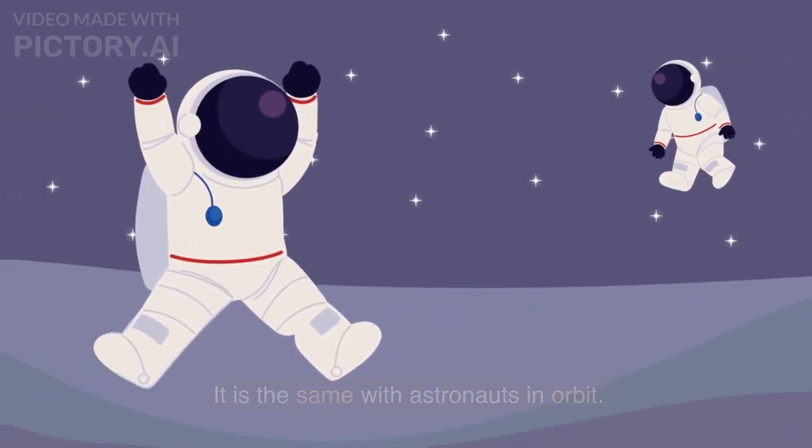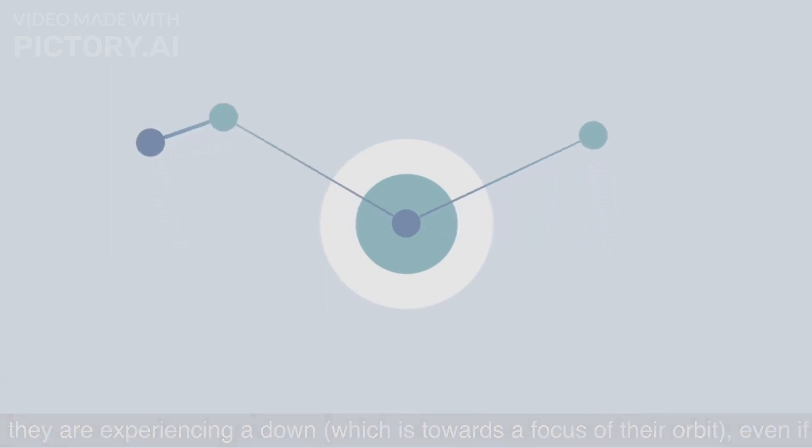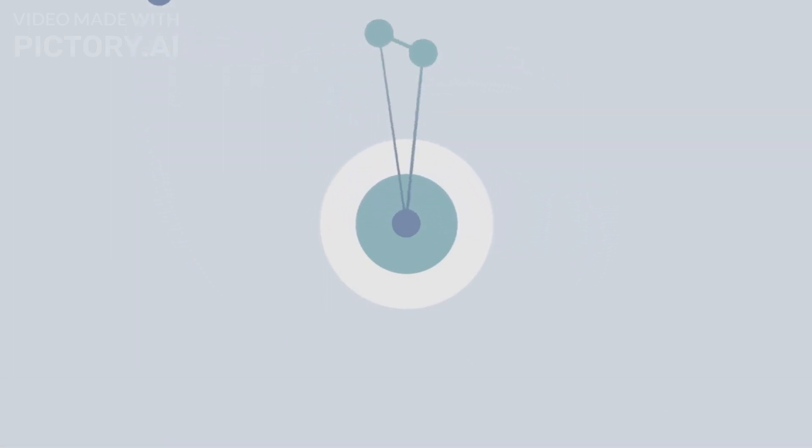It is the same with astronauts in orbit. The round path of their orbit is a direct indication that they are falling and that they are experiencing a down, which is towards a focus of their orbit, even if they can't feel it while in a state of free fall.